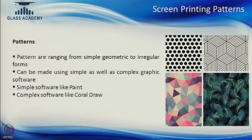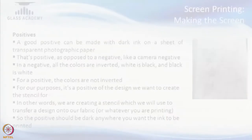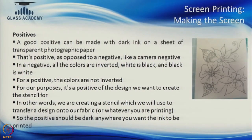The screens have to be made with a positive in mind — it is not a negative, it is a positive. I will explain in the next slide. You can print patterns and designs with screen printing; you can even do multicolor prints. You can use simple or complex software to make these prints and you can have many options that you can achieve. You have to make a positive to begin with. A good positive is made with dark ink, which does not let light pass through it, on a transparent sheet of photographic paper.